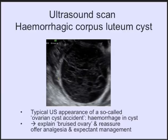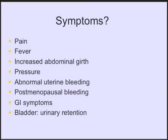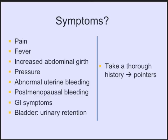It's important to note what symptoms a woman might present with: pain, fever, increased abdominal girth, symptoms of pressure, abnormal uterine bleeding, post-menopausal or post-coital bleeding, gastrointestinal symptoms, changed bowel habits, frequent or blood-stained stools, and bladder symptoms — particularly, a mass can result in urinary retention because the urethra is kinked off due to pressure. Take a thorough history, as it will give you pointers. In an OSCE exam, follow this sequence religiously to impress the examiner.